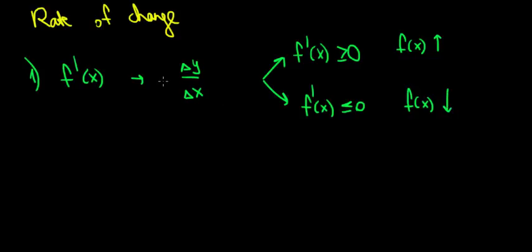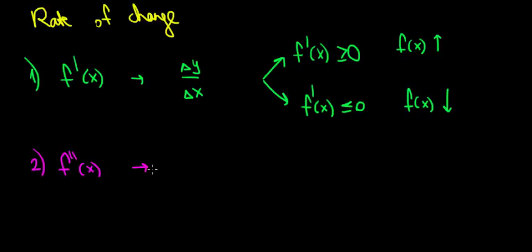That covers the first order derivative. But what does the second order derivative show us? Well, it shows us how the change occurs. Does the function increase at an increasing rate or at a decreasing rate? Or the opposite — does the function decrease at an increasing rate or at a decreasing rate?